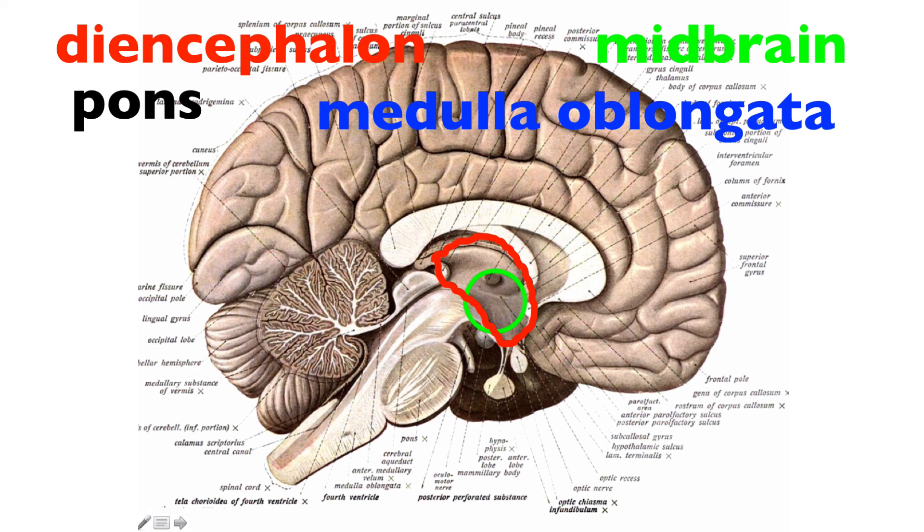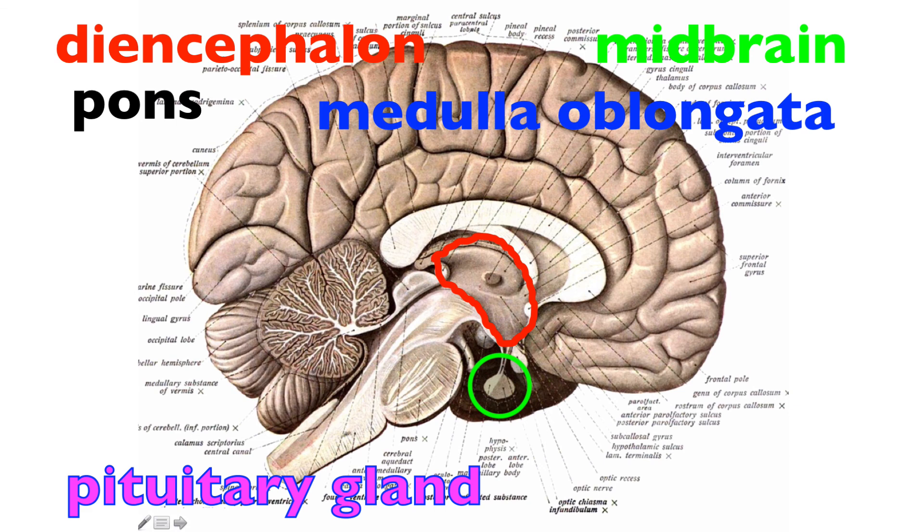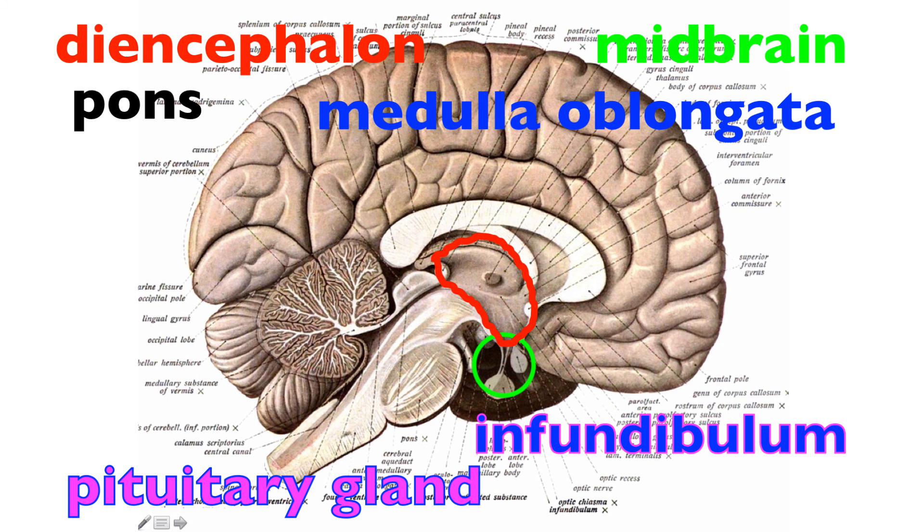One thing to point out coming off the diencephalon inferiorly is the pituitary gland, and that is connected to the diencephalon via this stalk right here known as the infundibulum. So once again, back to the brain stem is the diencephalon, which is right here.